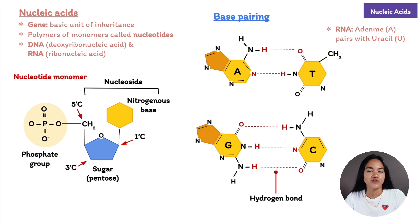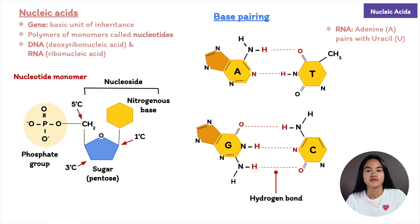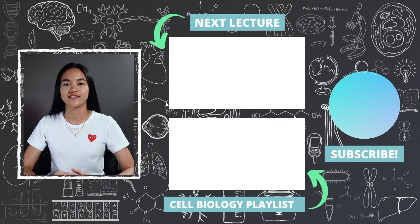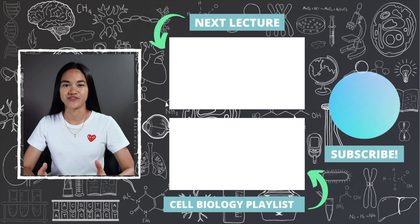In this lecture we learned that there are four different classes of large biological molecules: carbohydrates, lipids, proteins, and nucleic acids. Lipids are not considered macromolecules because they are not big enough. We covered how macromolecules are synthesized and broken down, and the structure and function of each class of large biological molecules. Thank you for watching — make sure you subscribe to EKG Science so you don't miss a single lecture.